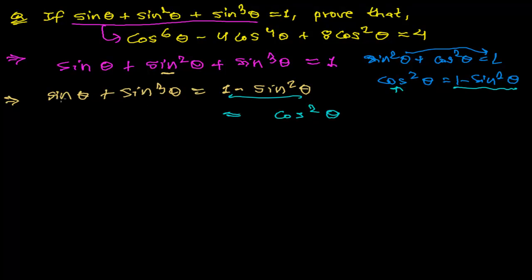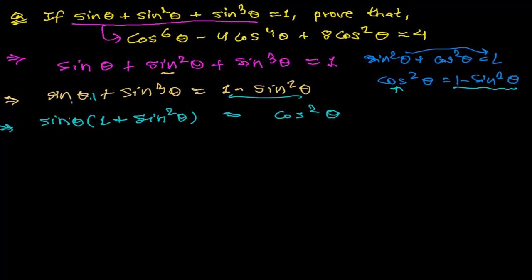On the left side I can't do anything except take sin θ as a common factor. Taking sin θ common gives sin θ(1 + sin²θ) = cos²θ. I can convert sin²θ to cos²θ, but to convert sin θ to cosine I must square it, which I'll do in the next step.